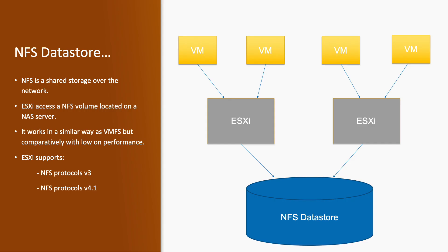NFS stands for Network File System. It is a shared storage over the network, and ESXi accesses an NFS volume located on a NAS server. We have NAS storage available on the bottom layer, and using the Ethernet port, ESXi accesses that data store and assigns the space to the virtual machine in the form of a virtual disk. It works in a similar way to VMFS but with comparatively lower performance. For NFS versions, we have two types: version 3 and version 4.1.